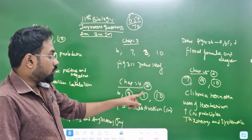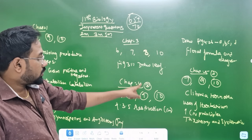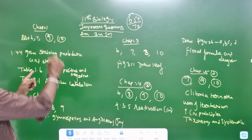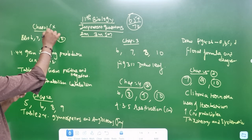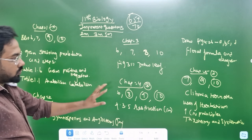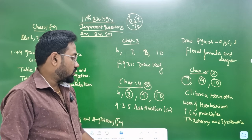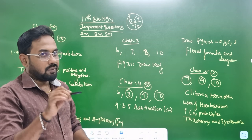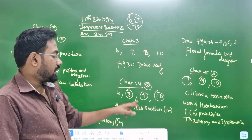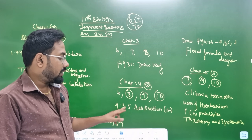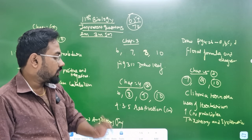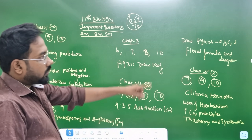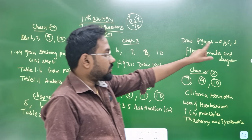Chapter 4 is very important. Estivation is 4.3.4. Diagram is 6.8.19. Figure 4.26 is A, B, C, D.